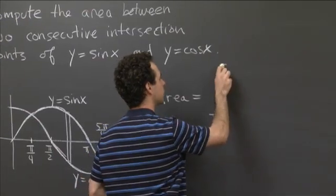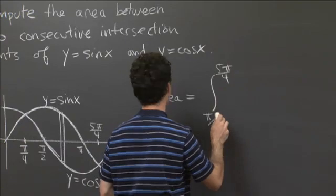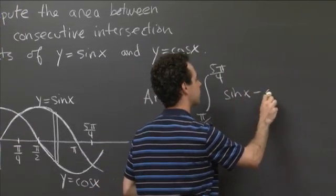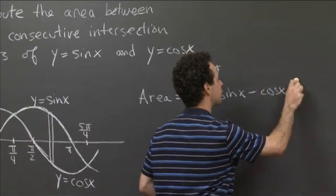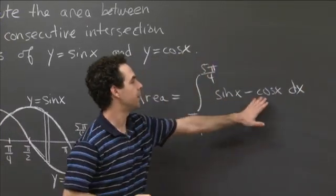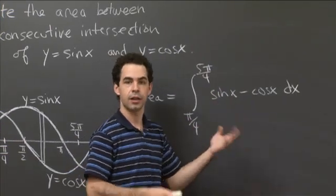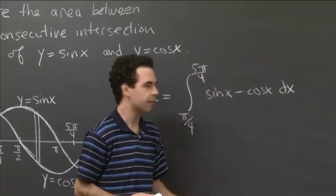So the area is just the integral from π over 4 to 5π over 4 of sine x minus cosine x dx—top minus bottom to get the height. If you did it backwards, if you wrote cosine minus sine, what you would get is exactly the negative of the area.